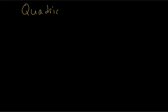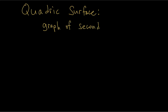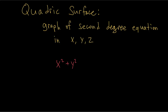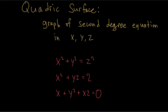A quadratic surface is just the graph of any second-degree equation in x, y, and z. A second-degree equation in x, y, and z just means it has any sort of combination of the variables x, y, and z, and they can only be at most to the second power. Here are a few examples of quadratic surface equations. These are basically a family of graphs that live in three-dimensional space.